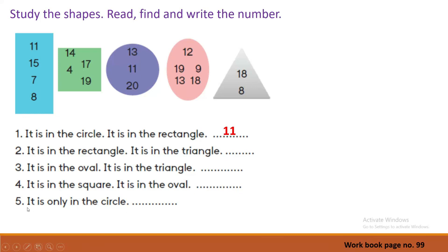Number 5: it is only in the circle. What is the key word here? Only. What is the number? Can you guess? Yes, very good — number 20. Now you can write the answer.